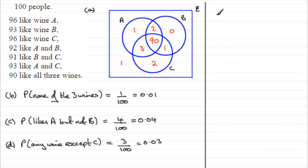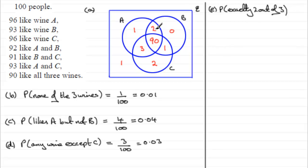Let's come to part E — the probability that exactly two out of the three wines are liked. So exactly two out of three: that's this two here — two people like just A and B but not C. This one person likes B and C but not A. And the three here — three people like A and C but not B. So you add up three, two, and one, which comes to six. So it's six out of 100, or as a decimal, 0.06.